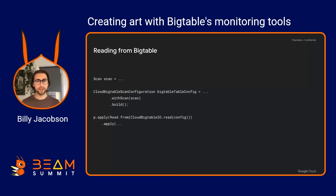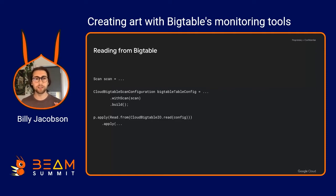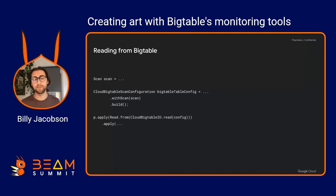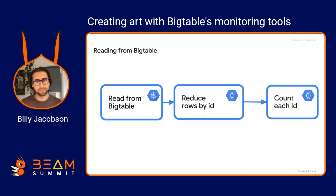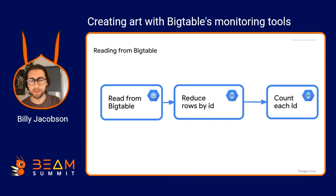Reading from Bigtable: you have a configuration and then do your standard read from with the Cloud Bigtable I/O connector. I'm also passing a scan so I'm not scanning the whole table — I can do a prefix scan to get all the data for phones or all the data for a phone with a specific ID. Then from there you could read from Bigtable, reduce by ID, and do any kind of ETL you want, like counting by ID.